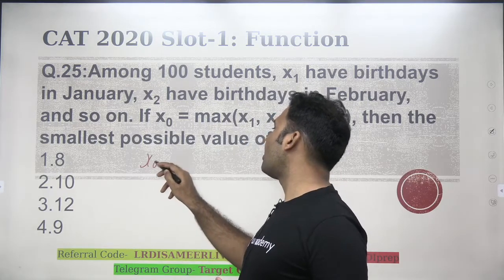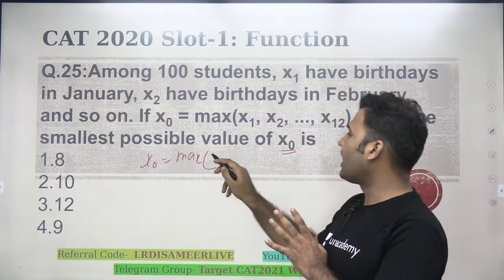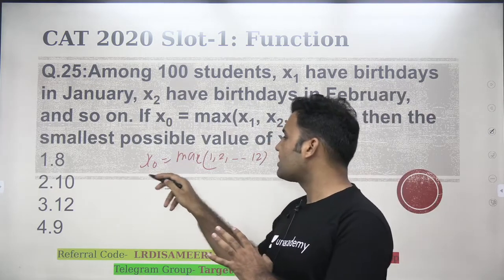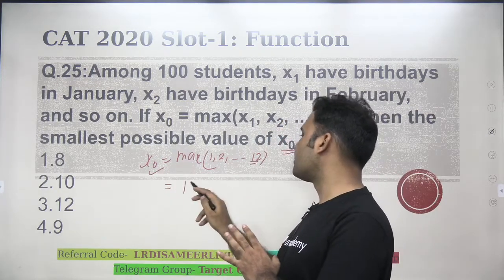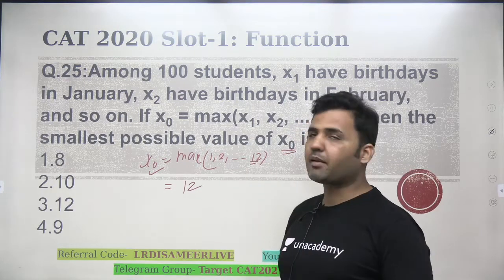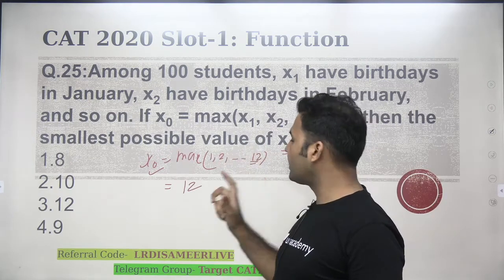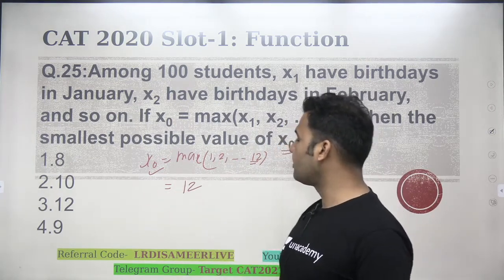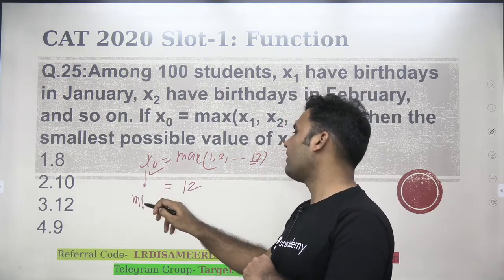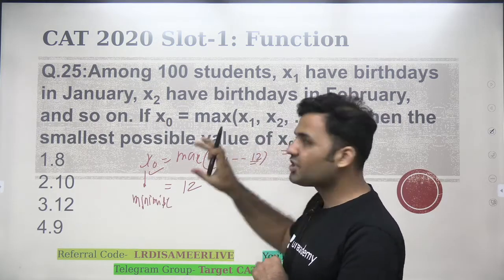You see that x0 is max of the values written in the bracket, that means if I say, let's say, if I have the values written here as 1, 2, 3, up to 12, what will be the value of x0? The value of x0 will be equal to 12, because it's a maximum of all the values written in the bracket. Whatever values are written in the bracket, the maximum of it will be the output, and that is a value of x0. Now, as per the question, I'm supposed to minimize x0.